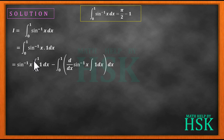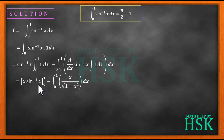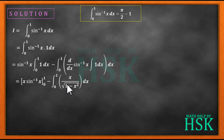So I can write this as x into sine inverse x from limit 0 to 1, minus the integration of x upon square root of 1 minus x square dx from limit 0 to 1. This remaining integral can only be solved by the substitution method, so I will solve it separately.